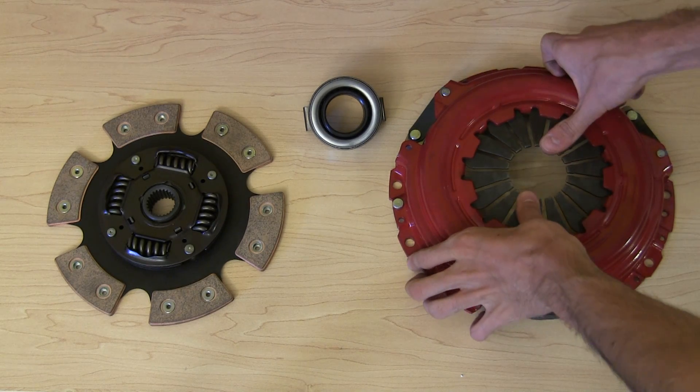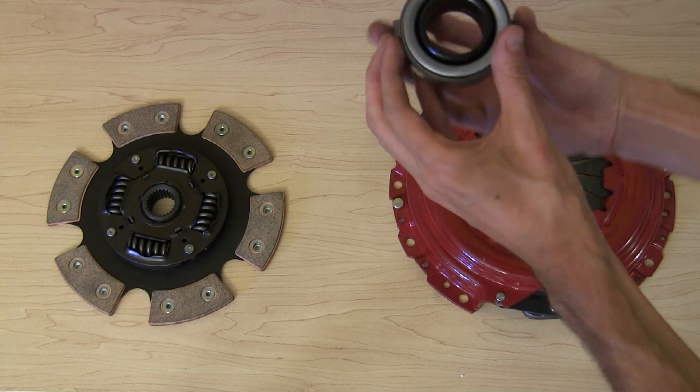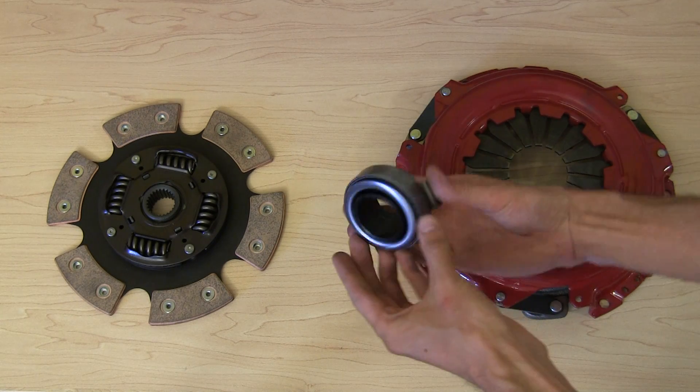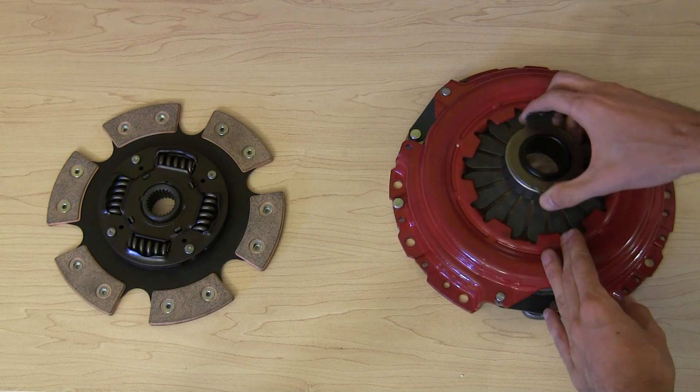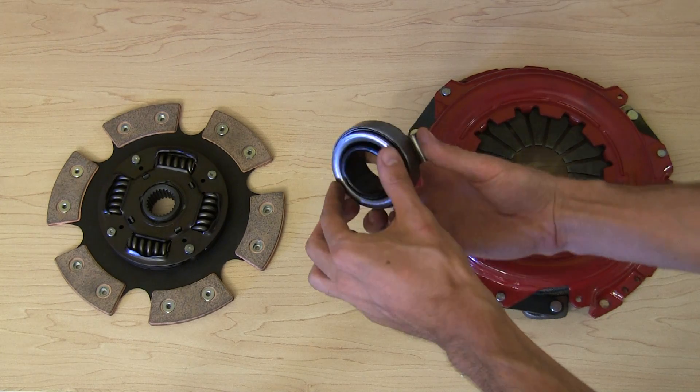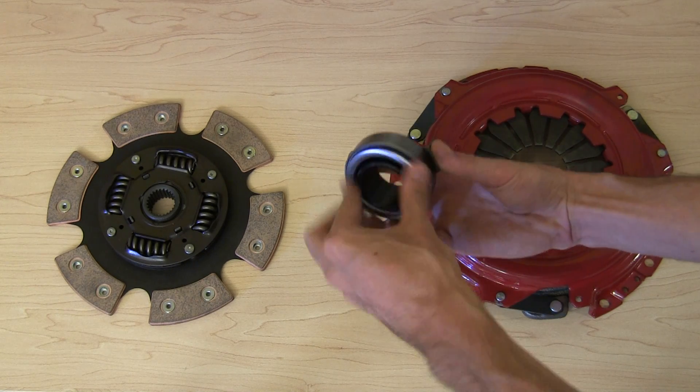So this is what you press on to release the clutch and this is the bearing that presses on that. So this is the throw out bearing and basically it can absorb a thrust load and rotate like this.